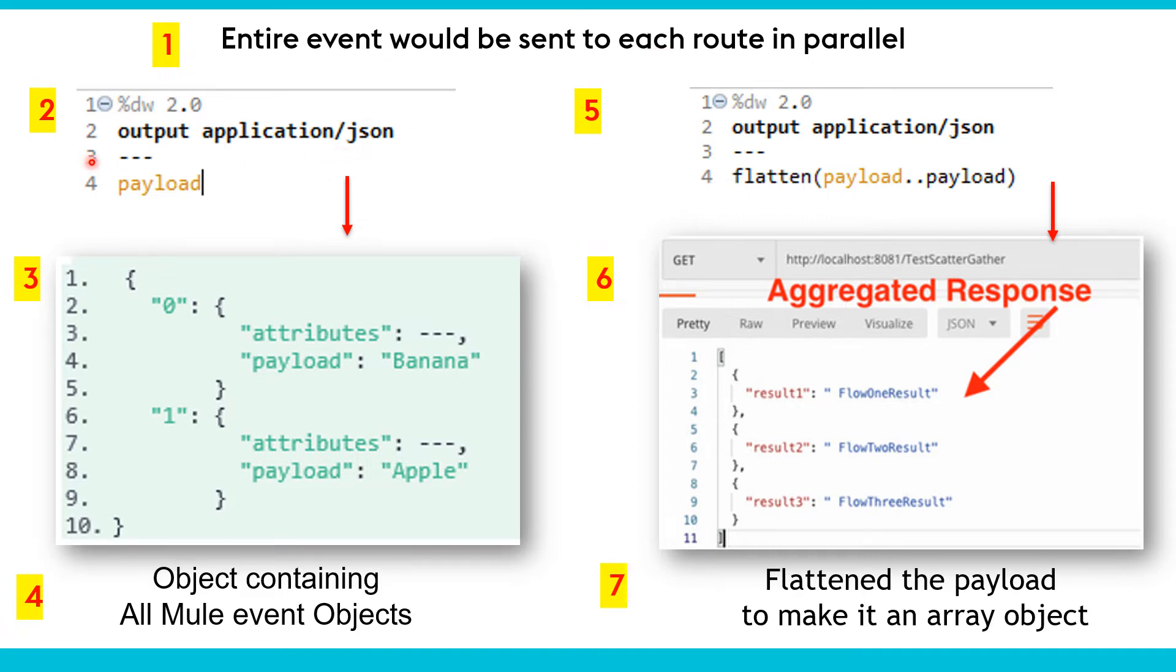There are two ways to gather the outputs coming from different routes. One way is to use payload and another way is to use flattened payload.